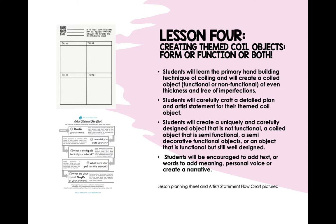Lesson 4: Creating Themed Coiled Objects — Form, Function, or Both. For this lesson, students will be introduced to ceramic objects that lack function and be given autonomy to create a coiled object that is functional or not. Students will continue to work on planning, revising, and adjusting throughout the making process through notes-to-self formative assessments, as well as gallery walk peer critiques. Students will be encouraged to add text, symbols, or other communicative decoration that adds meaning to the object, creates a narrative, or displays a sense of personal voice or style. Students will close this lesson by creating an artist statement to accompany their object.